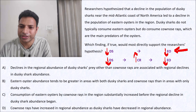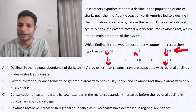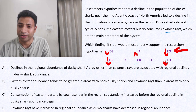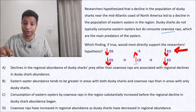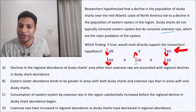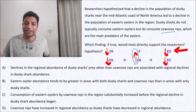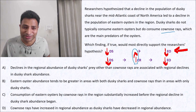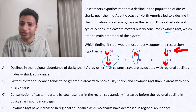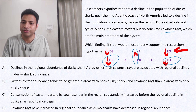Everything is given except for this fact: that cow nose ray population increases when dusky shark population decreases. So if cow nose ray population increases, then automatically eastern oysters population will go down — because if there are more cow nose rays, they will eat more eastern oysters. I just need this information. If I can find that their population is increasing and that is leading to the reduction in eastern oysters, then we can say eventually it is the decrease in dusky sharks which is leading to the decrease in eastern oysters. That was our main hypothesis.